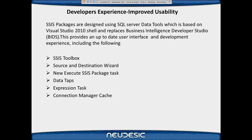The new Execute SSIS Package task is worth demoing. In 2005 and 2008, to have a master package call a child package, you used a combination of parent variables and sometimes environment variables - it was a bit clunky. Now it's simplified: you just assign parameters between parent and child, or variables between parent and child. Data taps allows you to troubleshoot after deploying your solution into production, tapping into different areas of your package to get output into a file to find out what is happening.